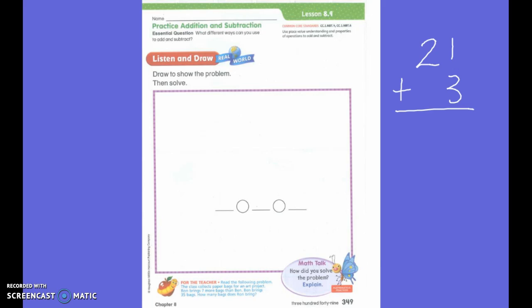What is another strategy? You could use your hundreds number chart. Absolutely. You could use your hundreds number chart. We could start at 21 and go three more.